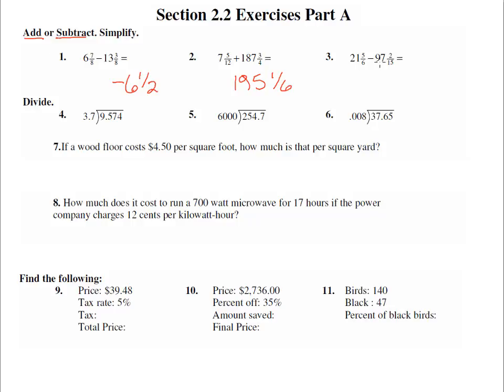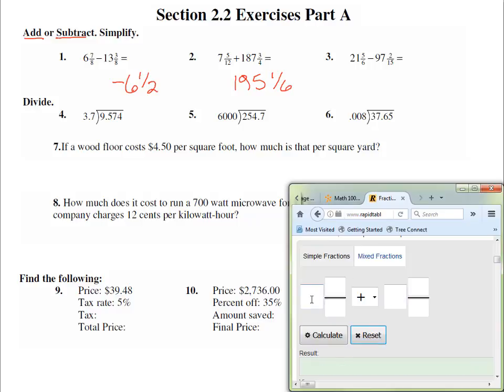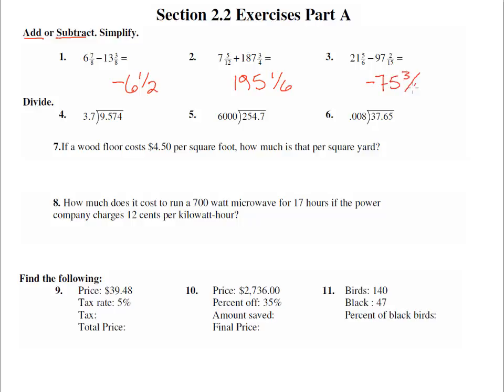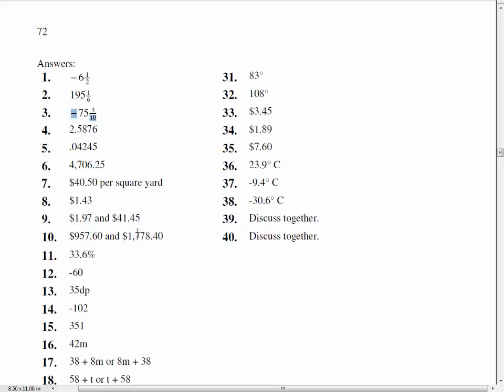Number three: 21 and 5 sixths minus 97 and 2 fifteenths. Let's pull up that calculator, reset it, and we get 21 and 5 sixths minus 97 and 2 fifteenths. Now in this one you'll notice if we did it by hand, we would need to get a common denominator between 6 and 15, probably up around 30. Change them, borrow, subtract with a negative on top. So this is where we get to see how enjoyable it can be to use a calculator. Look at that. Negative 75.3 is the decimal. Here's the mixed number version. I'll write that up here. Negative 75 and 3 tenths. And let's double check our answer. Negative 75 and 3 tenths. Good.